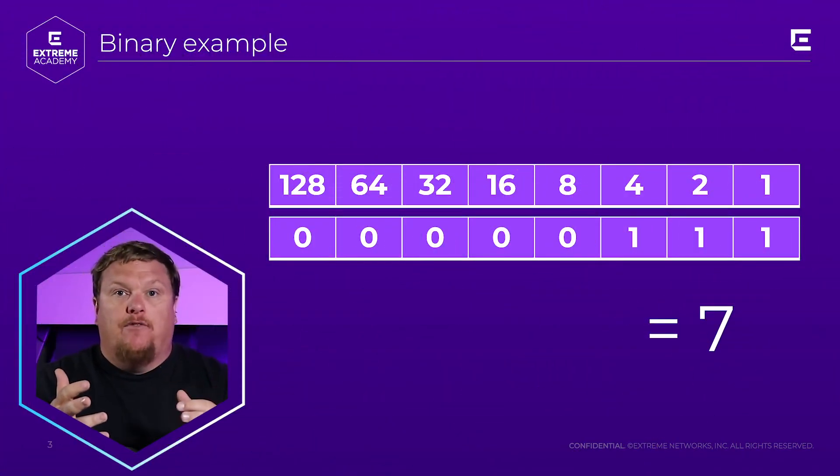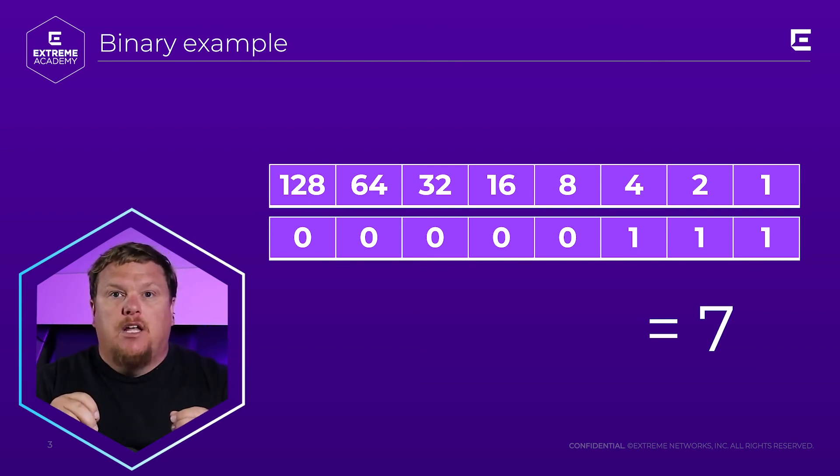The cool thing is these binary strings actually equal something — there's a conversion from binary to decimal. So if we have one one one, that actually equals seven. There are actually numbers in computers called IP addresses that are binary to a computer but decimal to us. So we can say 192.168.0.10 as tech people to each other, instead of saying the full binary string.